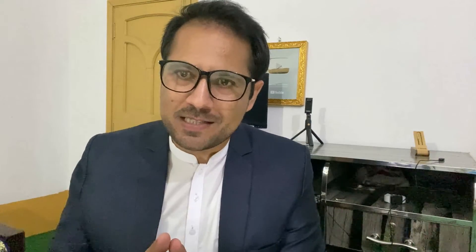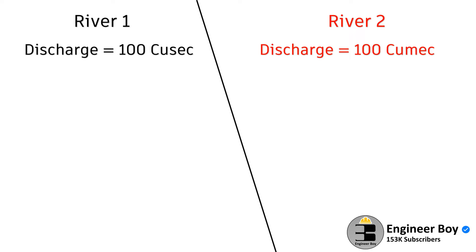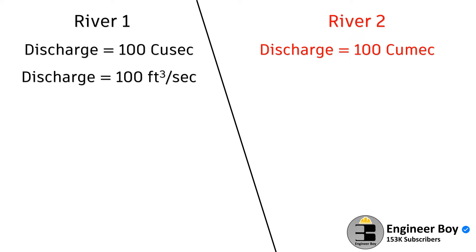Now let's have just an example. Let's say if there are two rivers: River 1 has a discharge of 100 QSIC, and River 2 has a discharge of 100 QMIC. That means River 1 is flowing at a rate of 100 cubic feet per second, and River 2 is flowing at the rate of 100 cubic meters per second.